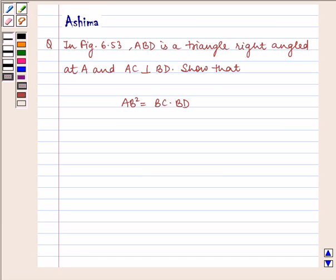Hello and welcome to the session. Let us understand the following question which says: In figure 6.53, ABD is a triangle right angled at A and AC perpendicular to BD. Show that AB square is equal to BC into BD.